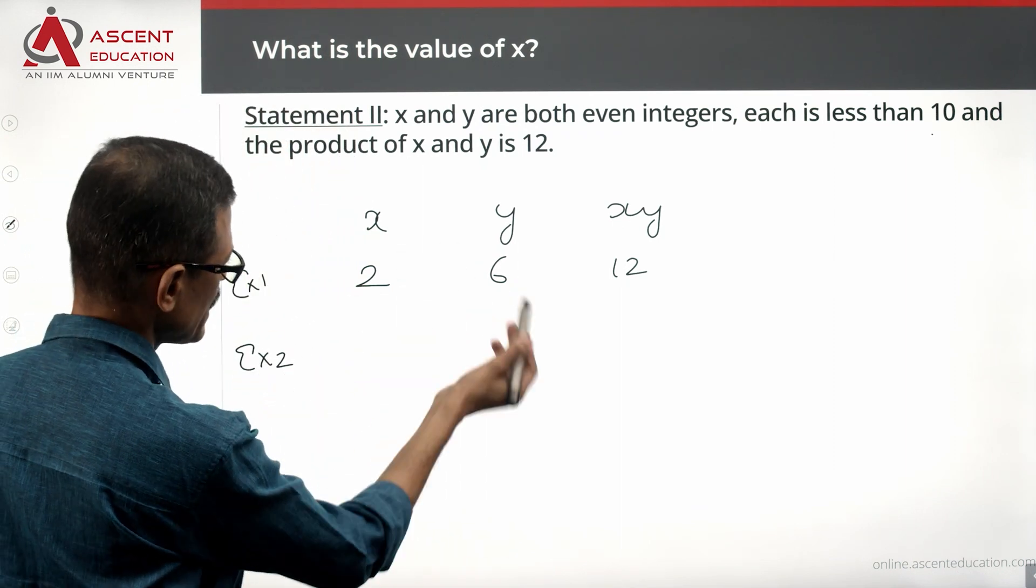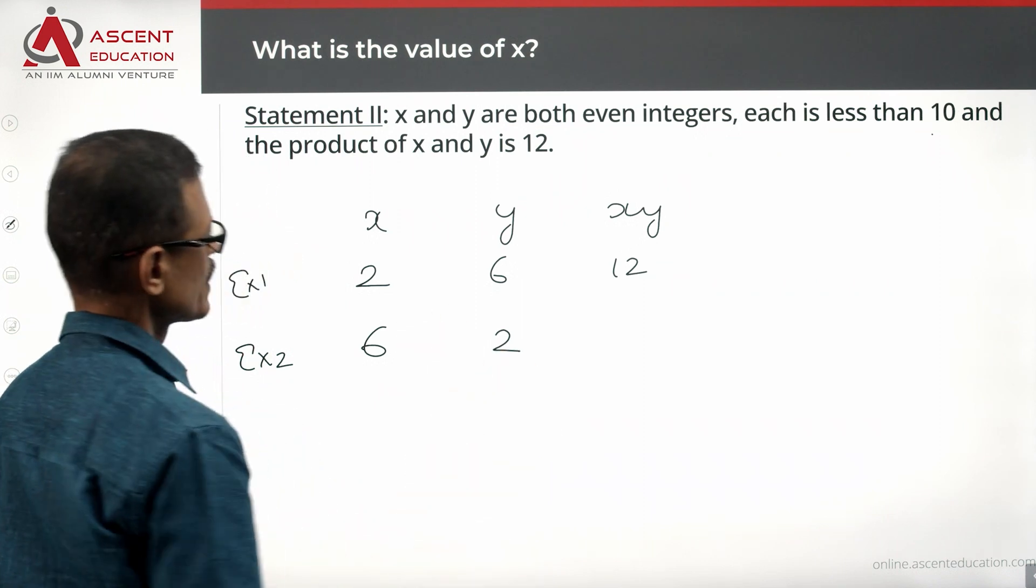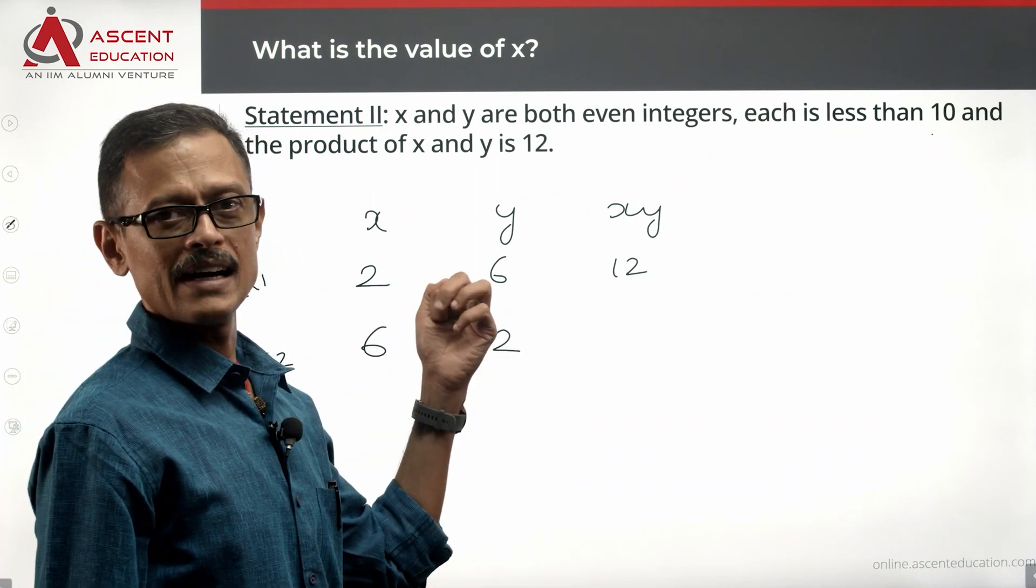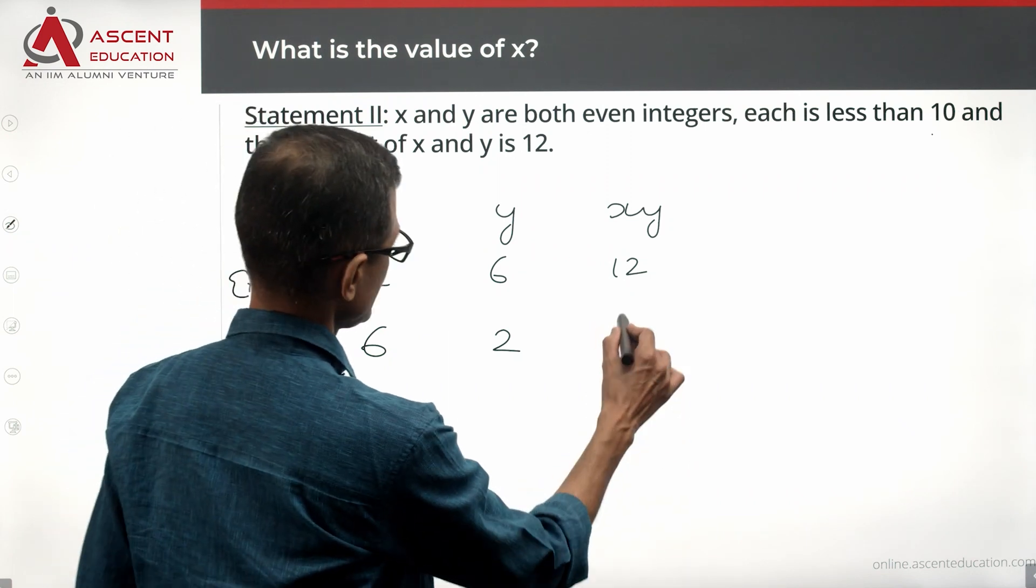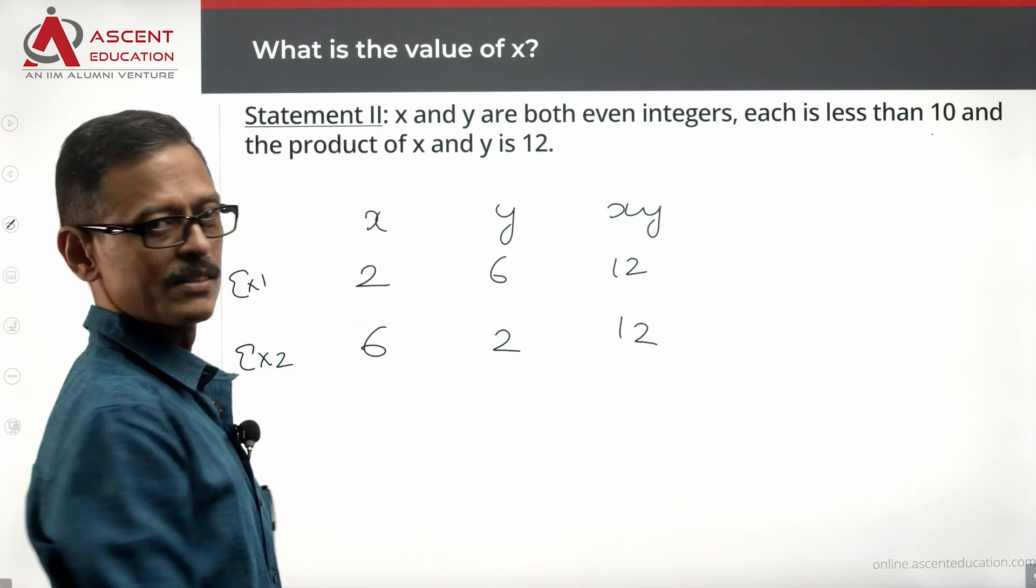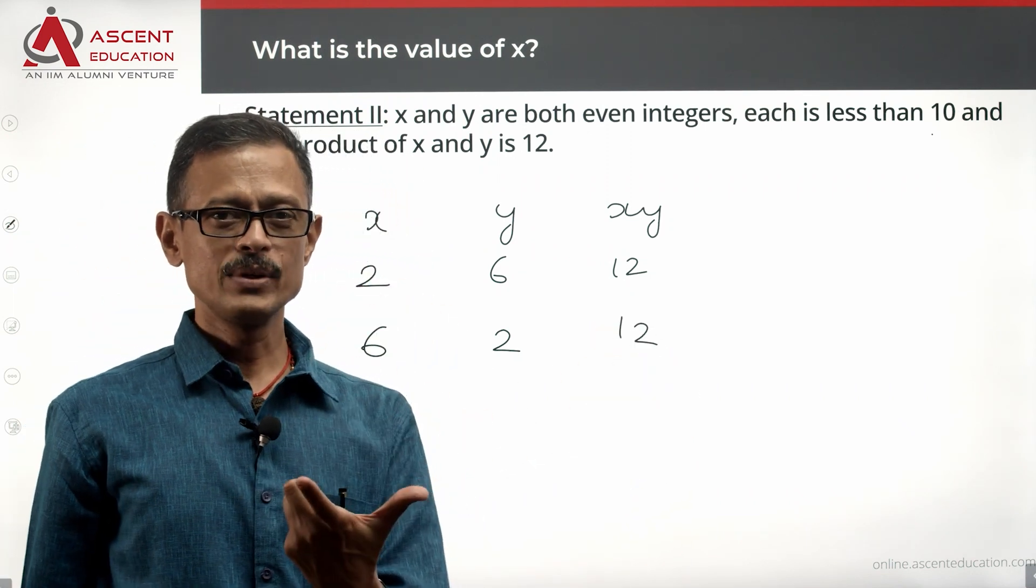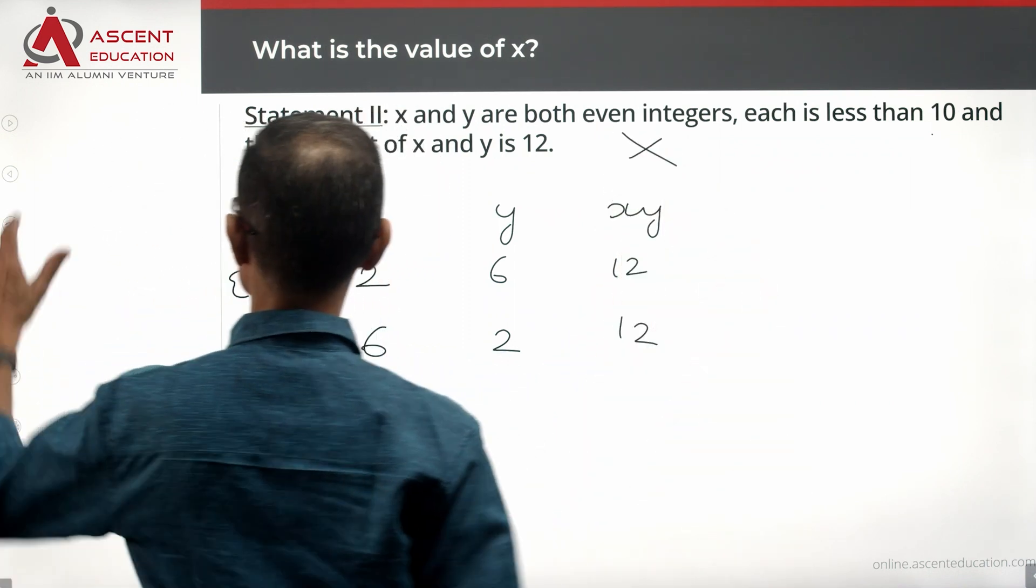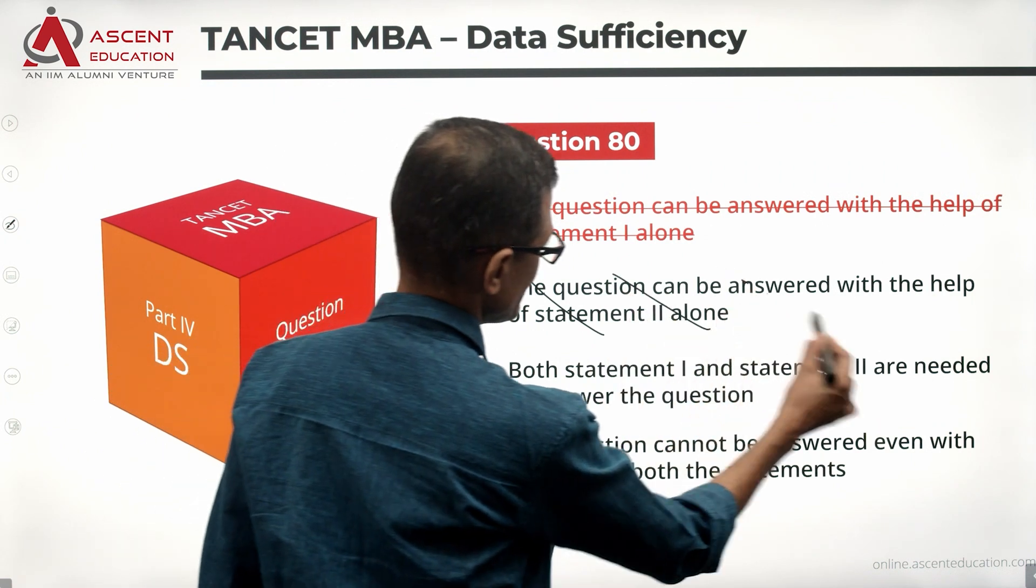If X would have a unique value... let me just check out whether you can get one more example. Swap them. X is 6 and Y is 2. X and Y are even, both X and Y are numbers less than 10, the product is 12. If X would have a unique value, definitely no. So statement 2 alone is also not sufficient. So we can eliminate choice B.